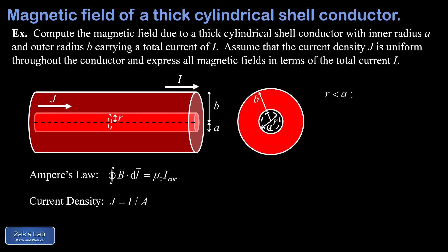Before calculating the interesting case, let's see why the other two are trivial. First, if we take an Amperian loop inside radius a, the enclosed current is zero because that's the hollow center. Writing down Ampere's law, the enclosed current on the right-hand side vanishes. The path integral is always trivial here: B dotted into dl becomes just B times dl because the magnetic field points in the same direction as every path increment, and the magnitude of B is constant along the loop.